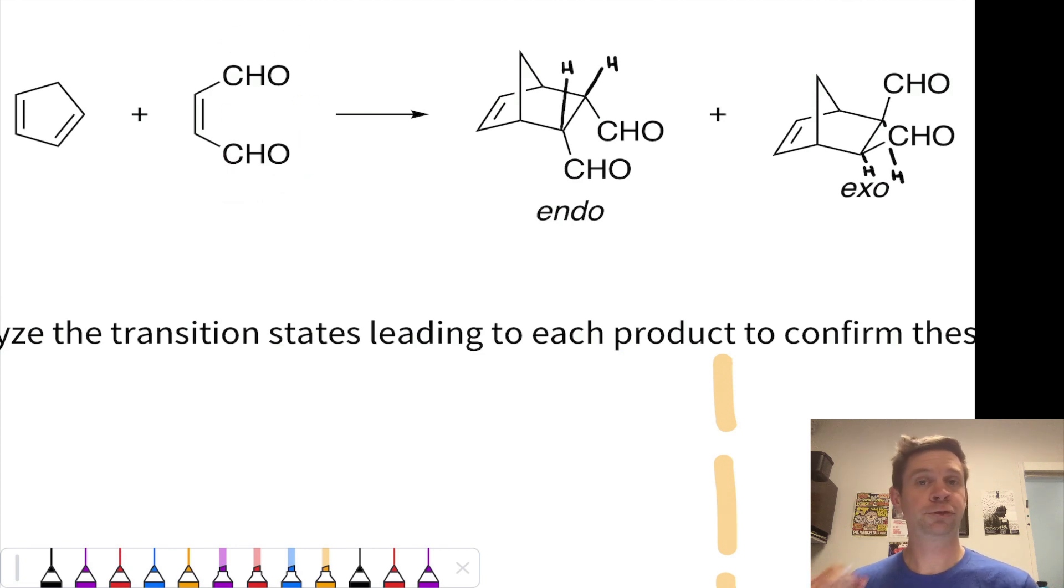Because those aldehyde groups are cis in the dienophile, they end up cis in the cyclohexene product, and we see that here. Two CHO groups on the same side of the newly formed sigma bonds in the newly formed six-membered ring, which is right here.